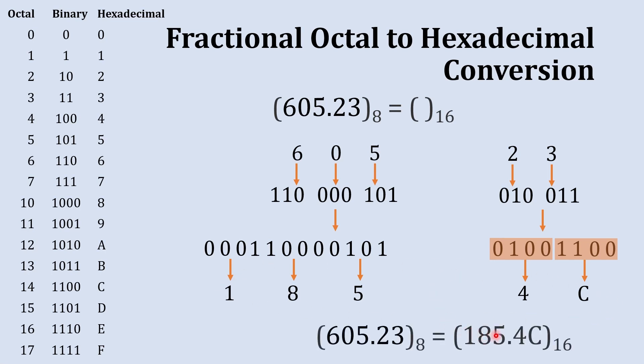So 185.4C is the hexadecimal equivalent of octal 605.23. The process is simple: convert octal to binary first, then binary to hexadecimal. Several practice octal fractional numbers are shown on screen — solve them quickly and write your answers in the comments below.